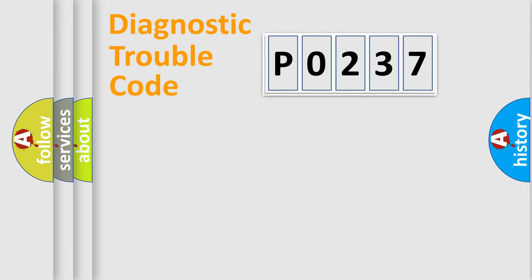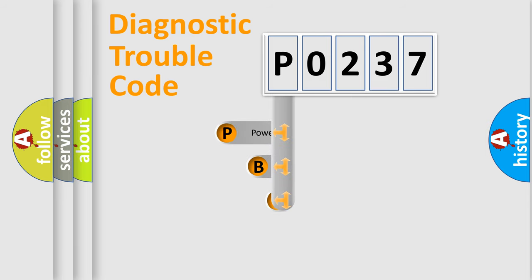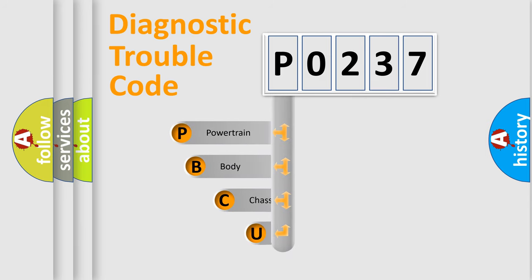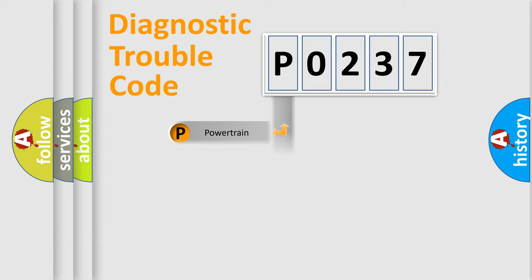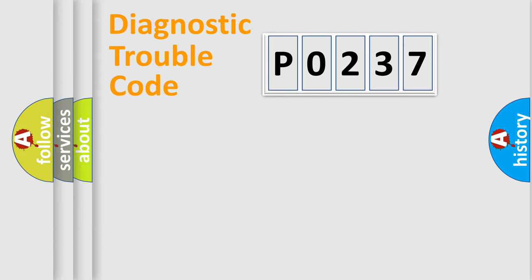Let's look at the history of diagnostic fault code composition according to the OBD2 protocol, which is unified for all automakers since 2000. We divide the electrical system of the automobile into four basic units: Powertrain, Body, Chassis, and Network.